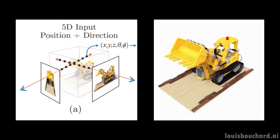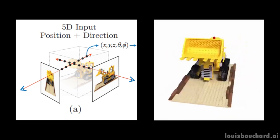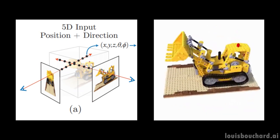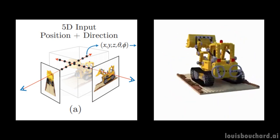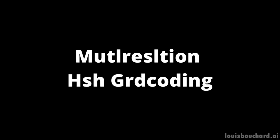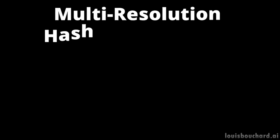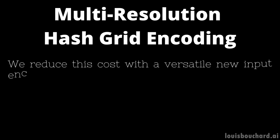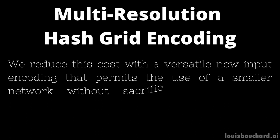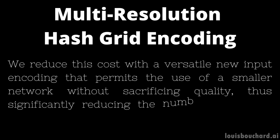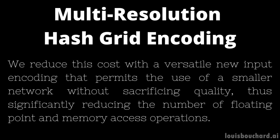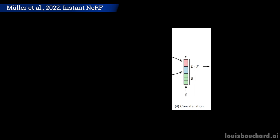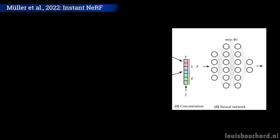Did I say a few hours? I'm sorry, I was still in 2021. It now does that in a few seconds. This new version by Nvidia called Instant Nerf is indeed 1000 times faster than its Nerf predecessor from a year ago. Why? Because of multi-resolution hash grid encoding. They explained it very clearly: "We reduce the cost with a versatile new input encoding that permits the use of a smaller network without sacrificing quality, thus significantly reducing the number of floating point and memory access operations." In short, they change how the Nerf network will see the inputs, so our initial 3D model prediction makes it more digestible and information-efficient to use a smaller network while keeping the quality of the outputs the same.